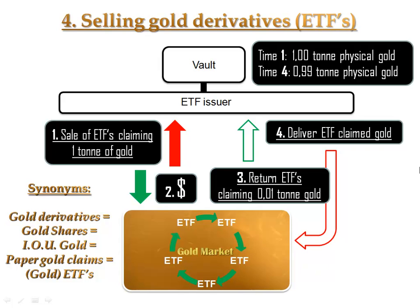The use of derivatives has another very advantageous aspect for governments and central banks: derivatives mask the expansion of the amount of money in circulation. Derivatives provided a method to hugely expand the amount of money in circulation without it being noticed when measuring M1, M2, or M3 money supply. Because all the newly created money went to the newly created derivatives, the M3 money supply expanded much more slowly than would have been the case had no derivatives been created. And thus, inflation went unnoticed.